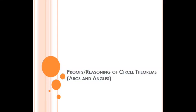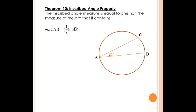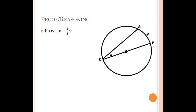In this video we're going to look at some of the proofs or the reasoning behind some of these circle theorems. We've learned a lot about arcs and angles and I've kind of handed you the theorems, but I want you to know why. So I'm going to do what I call lazy proofs — not perfect or formal proofs, but just enough so you can get a grasp on why this is the case.